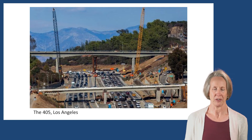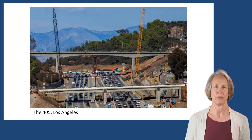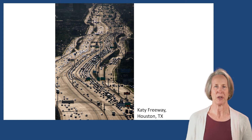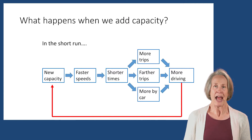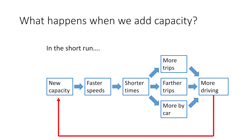That approach led to big projects like the I-405 widening in LA a few years ago, and this monstrosity in Houston where we've widened the freeway to fill whatever space we have. But what happens when we add capacity? In the short run, the new capacity means faster speeds for car traffic. Faster speeds mean shorter travel times. And with shorter travel times, people make longer trips, they take more trips, and they're more likely to take trips by car. All of that adds up to more driving — and that's what we call induced travel.